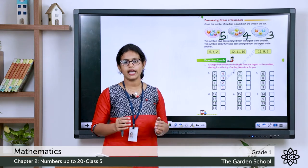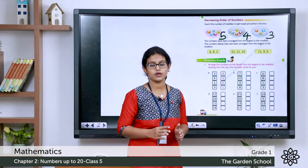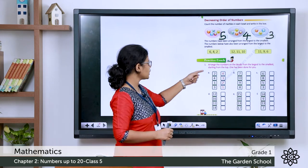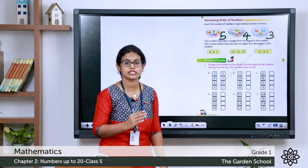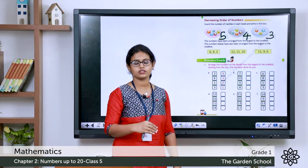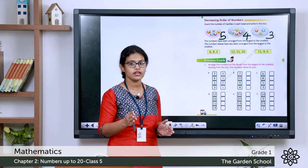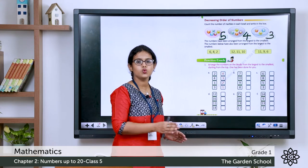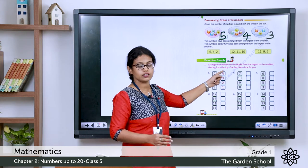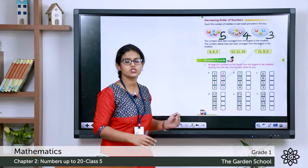Now let's do the exercise. Here you have to arrange the numbers from largest to smallest. The numbers are 2, 4, 1, 3 — arrange them in decreasing order. When we do backward counting: 5, 4, 3, 2, 1. So the order is 4, 3, 2, 1. That is the correct order.